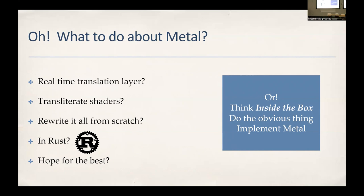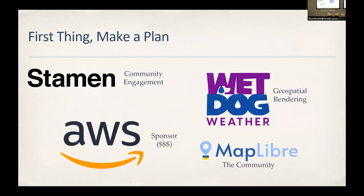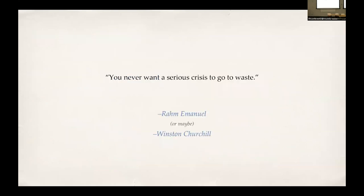They decided to just implement Metal. The first step was making a plan. Stamen knew all the right people and did the community engagement. AWS had the money. They roped in my company, Wet Dog Weather, to do the planning for the geospatial rendering. We're a weather company, but a couple of us previously worked on an open source toolkit called WhirlyGlobe which made the transition from OpenGL to Metal — so we know how to do that.